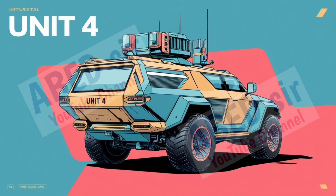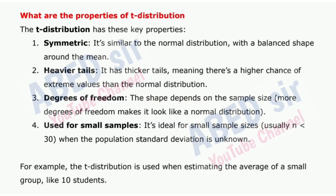Next, fourth unit. First important short question: What are the properties of T-distribution? The T-distribution has these key properties. 1. Symmetric: it's similar to the normal distribution with a balanced shape around the mean. 2. Heavier tails: it has thicker tails, meaning there's a higher chance of extreme values than the normal distribution. 3. Degrees of freedom: the shape depends on the sample size — more degrees of freedom makes it look like a normal distribution. 4. Used for small samples: it's ideal for small sample sizes, usually n less than 30, when the population standard deviation is unknown. For example, the T-distribution is used when estimating the average of a small group like 10 students.